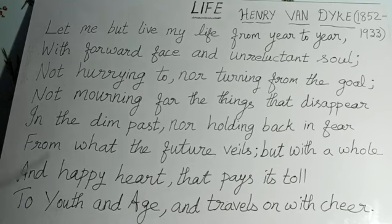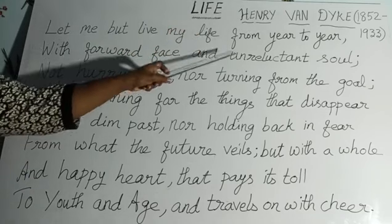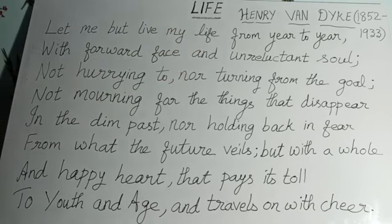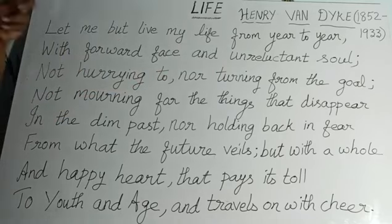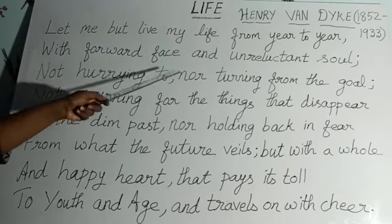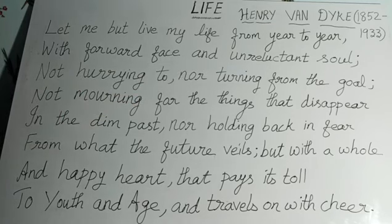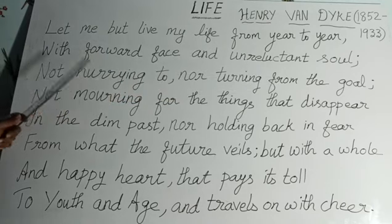In the first stanza the poet says how he wants to live his life. 'Let me but live my life from year to year with forward face and unreluctant soul' — the poet wants to lead a joyful life with forward face and an unreluctant soul, meaning a person who is willing to do something. 'Not hurrying to nor turning from the goal' — the poet wants to move towards his goal patiently without a hurry.